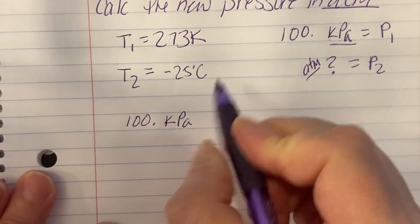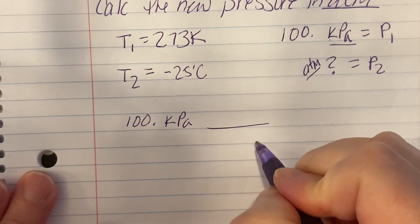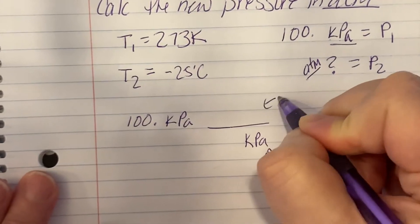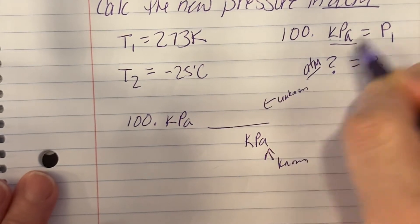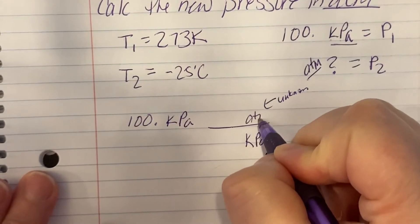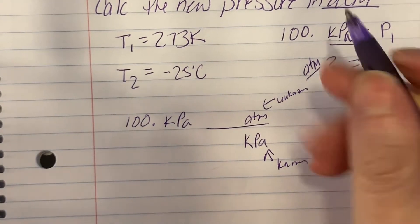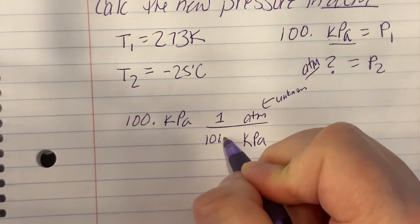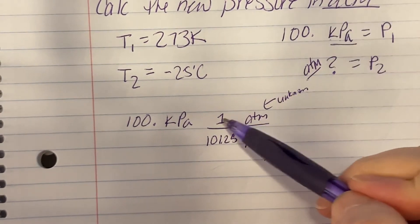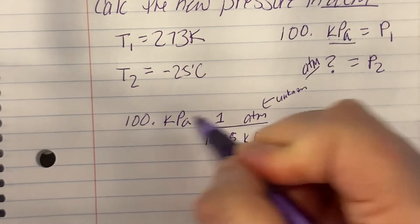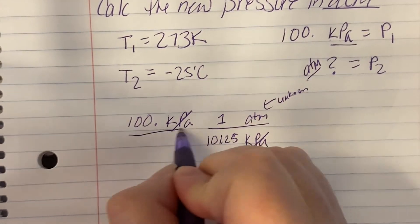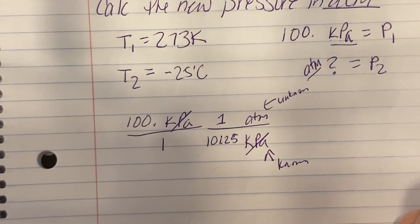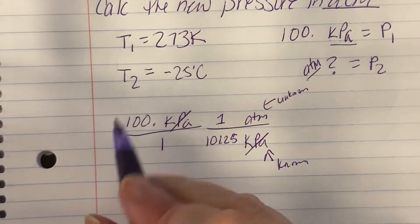100 kilopascals, and I need my conversion factor. Remember, I put my known on the bottom and my unknown on the top. What am I looking for? I'm looking for atmospheres, so that's my unknown. I look at my conversion sheet, and it says 1 atmosphere is 101.25 kilopascals.